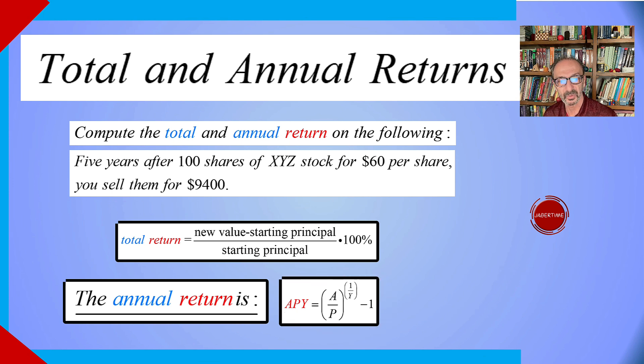Towards the end, I'll show you how to derive the formula, or where this formula came from. How come APY is equal to A over P to the power 1 over Y, all subtract one.